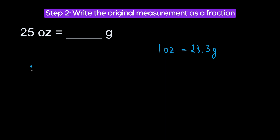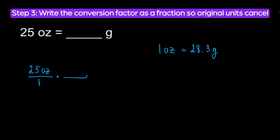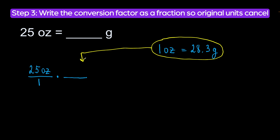Next, we are going to write our original measurement, 25 ounces, as a fraction. So, write 25 ounces over 1 and prepare to multiply. We are going to take our conversion factor and plug it in in such a way so our original units, ounces, cancel out.